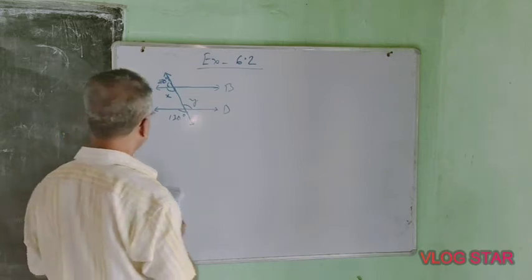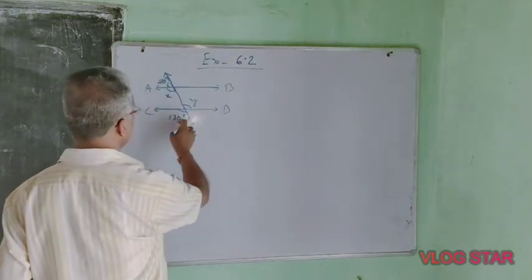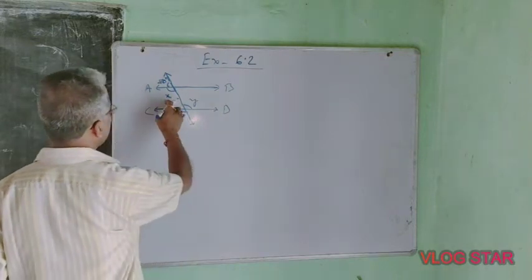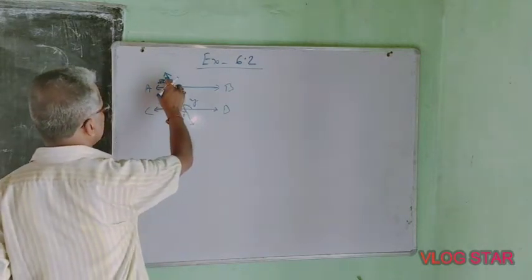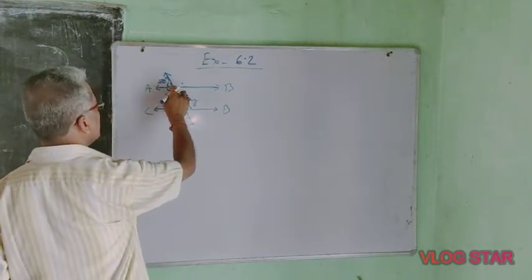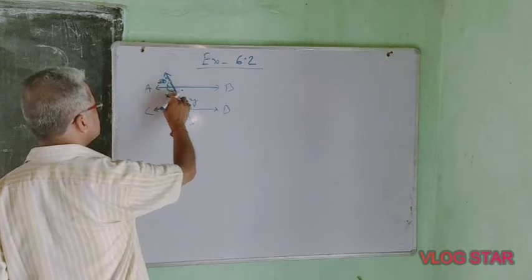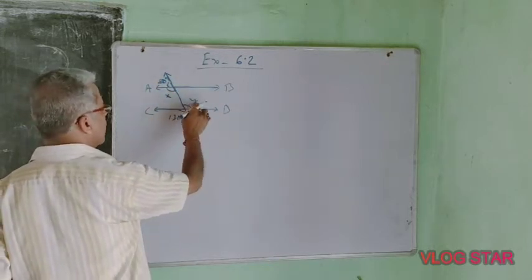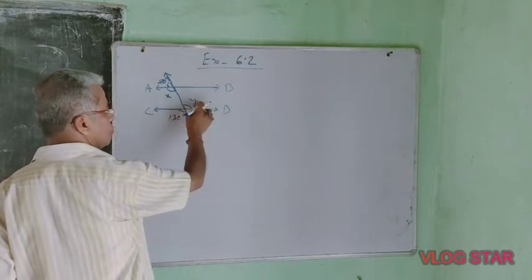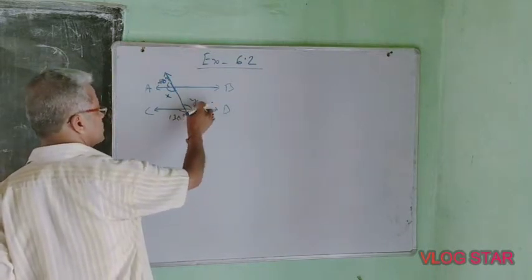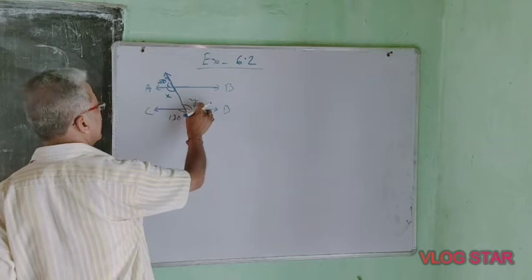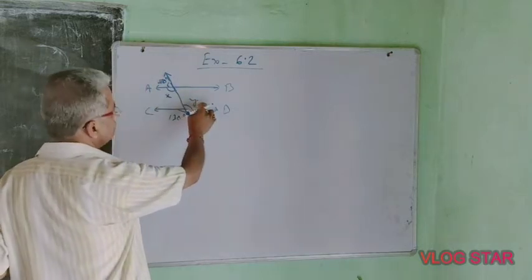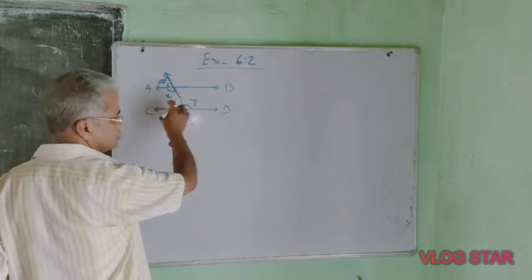Now y is vertically opposite to 130 degrees, and vertically opposite angles are equal, so y is 130 degrees. For x, the sum of adjacent angles is 180 degrees, but since x and y are alternate angles and y is 130 degrees, x is also equal to 130 degrees.